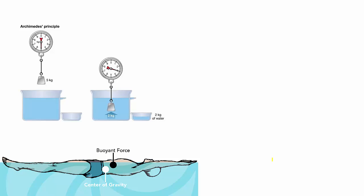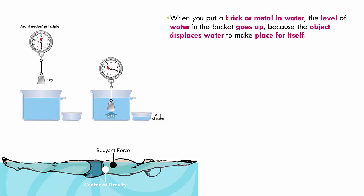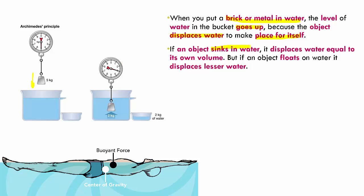Let's study this with an example. When you put a brick or metal inside water, the water level in the bucket goes up because the object is displacing water to make place for itself. Here, a 5 kg metal piece placed in water pushes water out through an opening. If an object sinks, it displaces water equal to its own volume. But if the object floats on water, it will displace a lot less water.